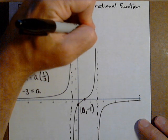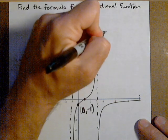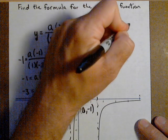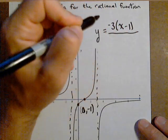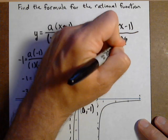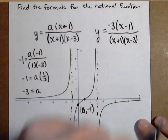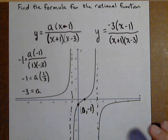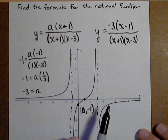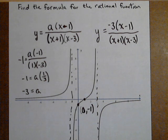We plug that back in, and we've got our function. So y = -3(x-1) / [(x+1)(x-3)]. And now we can verify this with our graphing calculator. I'm going to do another example in another video where we see some even multiplicities.